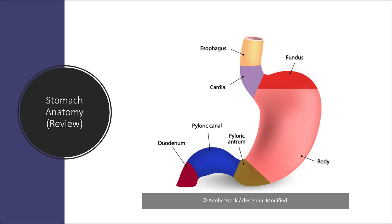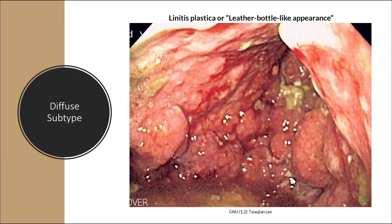To hammer this home: the intestinal subtype of gastric adenocarcinoma likes to affect the lesser curvature of the stomach, while the diffuse subtype tends to diffusely affect the stomach rather than a particular region. Here is a classic example of the endoscopy appearance of the diffuse subtype — the stomach wall is diffusely thickened throughout the length of the stomach. This appearance has been termed linitis plastica, or a leather bottle-like appearance, and this image is extremely important to be aware of for your boards.